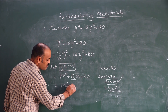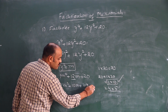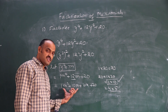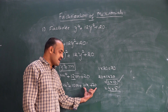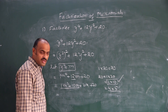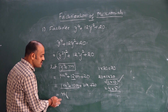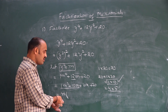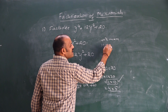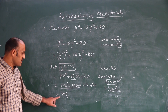Therefore, m² + 12m + 20 = m² + 10m + 2m + 20. There are 4 terms. I take the first two terms as one group and the last two as the second group. In the first group, m can be taken as common: m(m + 10). From m², taking m common gives m; from 10m, taking m common gives 10.